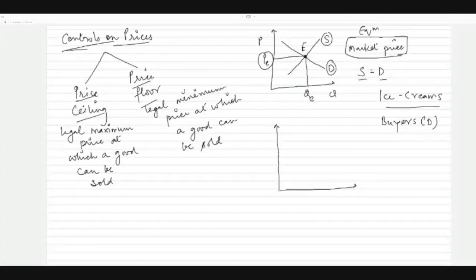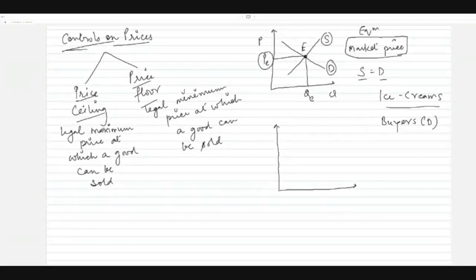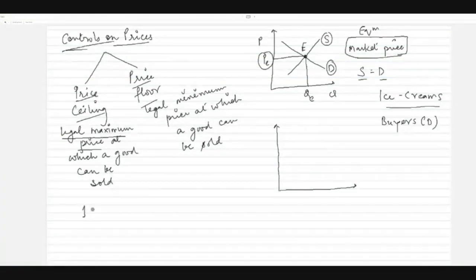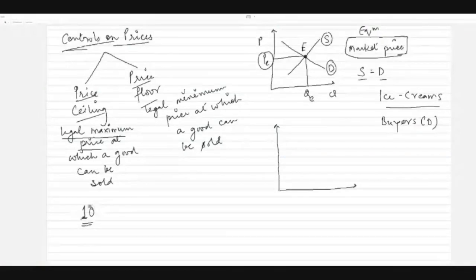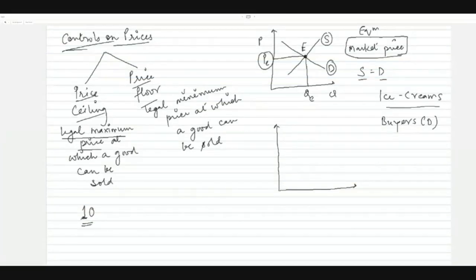So the government decides to introduce a ceiling — a legal maximum price above which this good cannot be sold. Suppose the government sets a maximum price of rupees 10. This is a legal price, not determined by market forces but set arbitrarily by the government. This means the price of this commodity cannot exceed rupees 10.